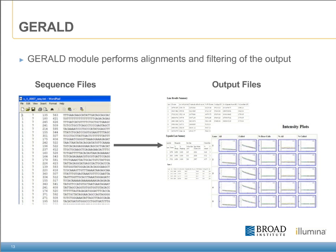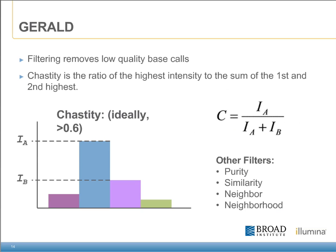As part of the output, a number of intensity plots are generated. These plots can be extremely useful in determining the quality of the samples, the chemistry, and the equipment throughout the run cycles. As part of the Gerald module, some initial filtering occurs in order to highlight the highest quality sequencing reads. Within the software is a chastity filter. This filter looks at the ratio of the highest intensity to the sum of the first and second highest intensity, as shown in the example. During processing, an ideal chastity filter of 0.6 is used to determine which reads are the highest quality. The software does not discard reads that do not pass the chastity filter — a column within the QSeq files indicates which reads pass the filter by a 1 or 0 designation.